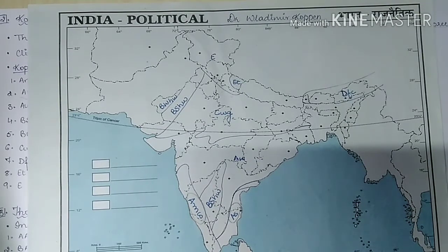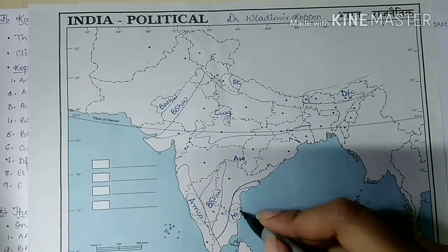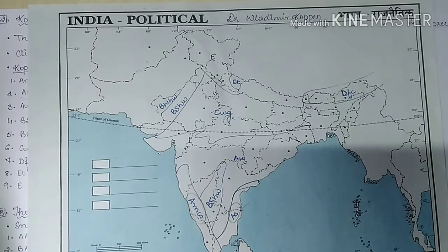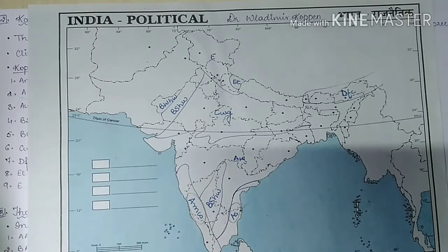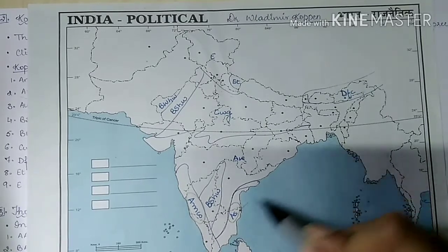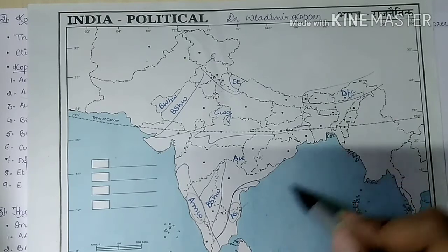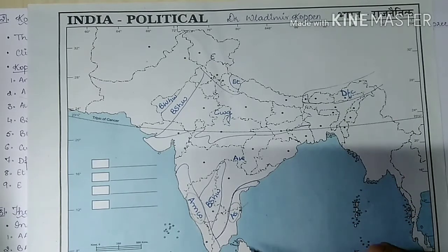AS — monsoon type with dry summers — includes the Coromandel Coast region: Tamil Nadu and adjoining areas of Andhra Pradesh. The amount of rainfall is 75 to 100 centimeters, mainly brought by the retreating monsoons in winter.